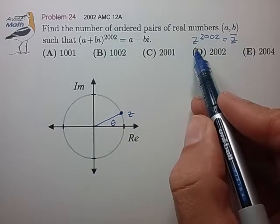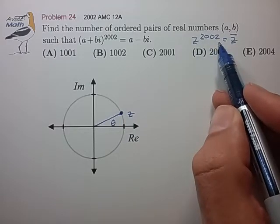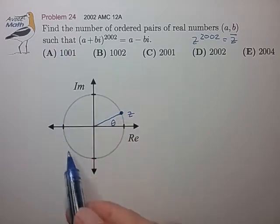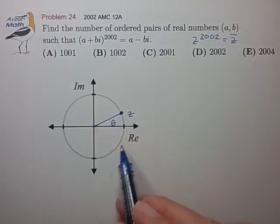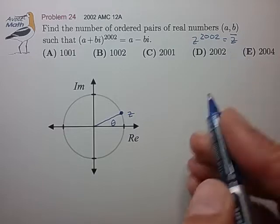The problem statement is such that we're going to take Z, raise it to the 2002 power, so essentially we're going to multiply theta by 2002, wrap around the unit circle however many times, and we want to end up at the complex conjugate of Z.